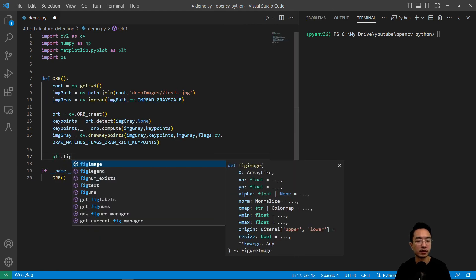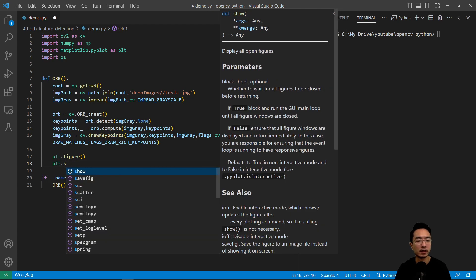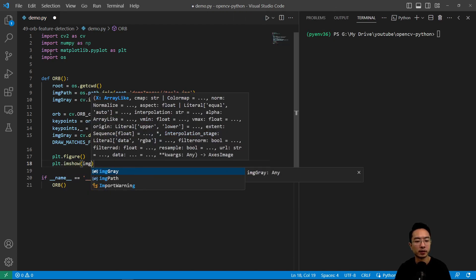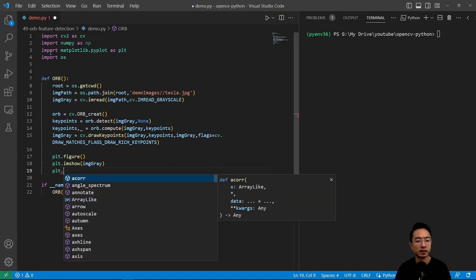Then we'll do plt.figure, plt.imshow the gray image, and then plt.show.